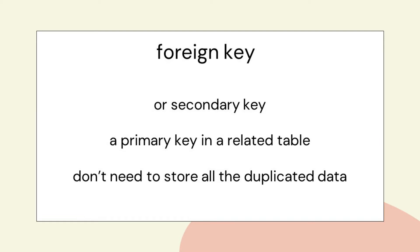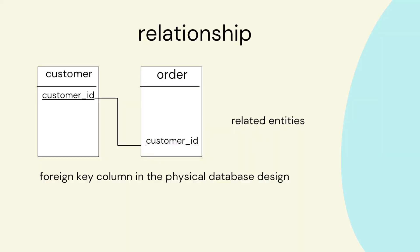We also have a foreign key, also called a secondary key, which is the primary key but in a different table. For example, here we have two entities: customer and order. The primary key is customer ID in the customer table. When we have an order, we want to relate that order to the customer. So rather than putting all the customer's details in, you can just put the customer ID in the order table, and then the tables are related.